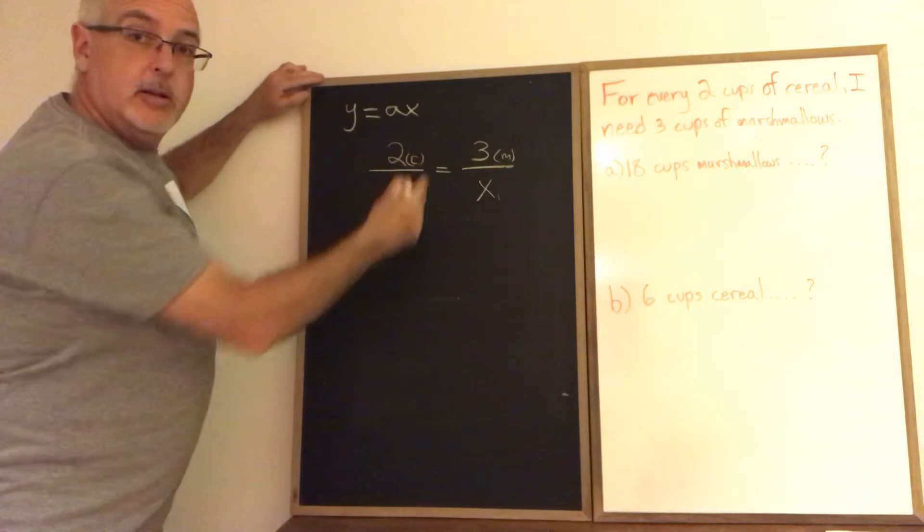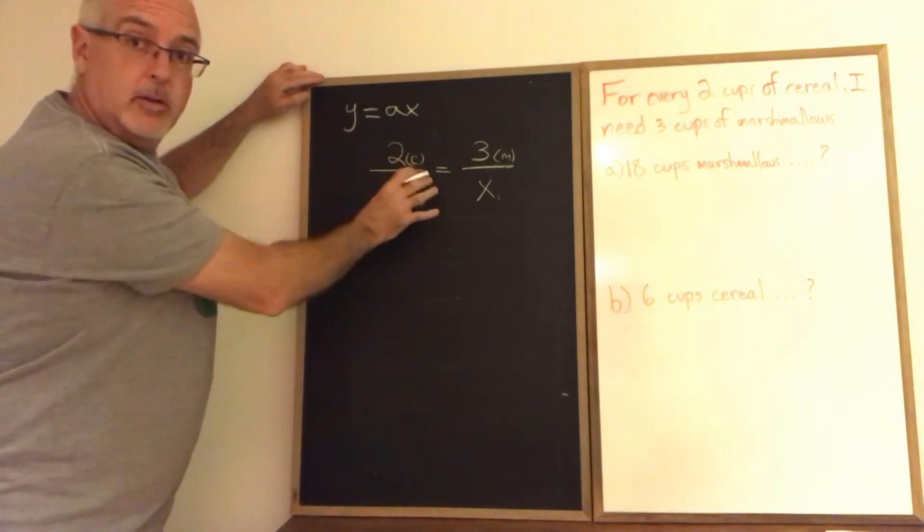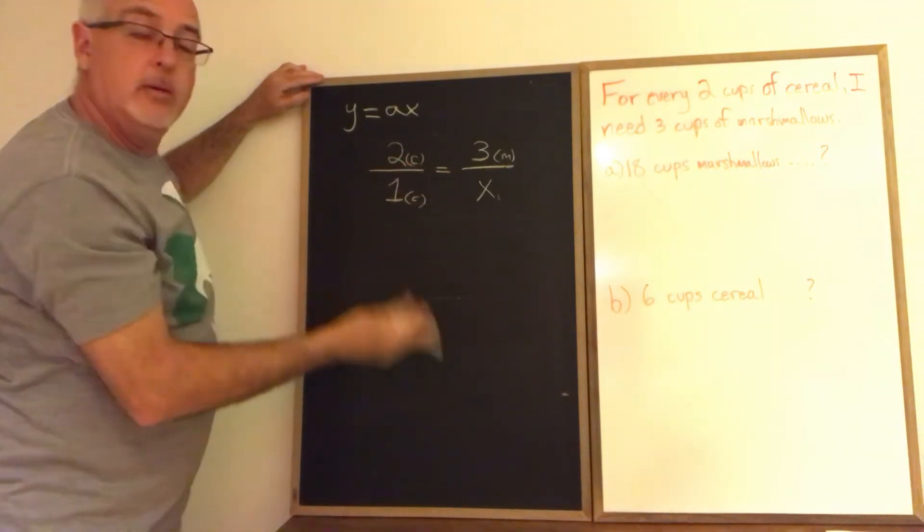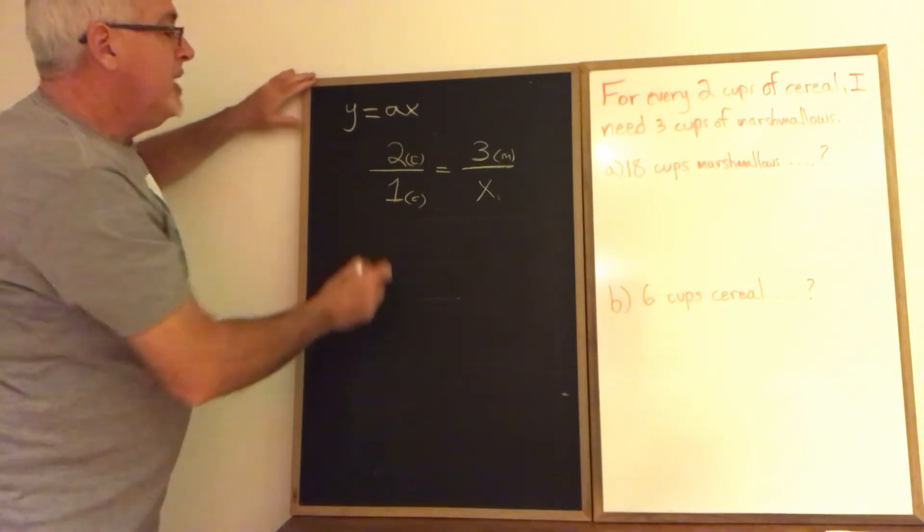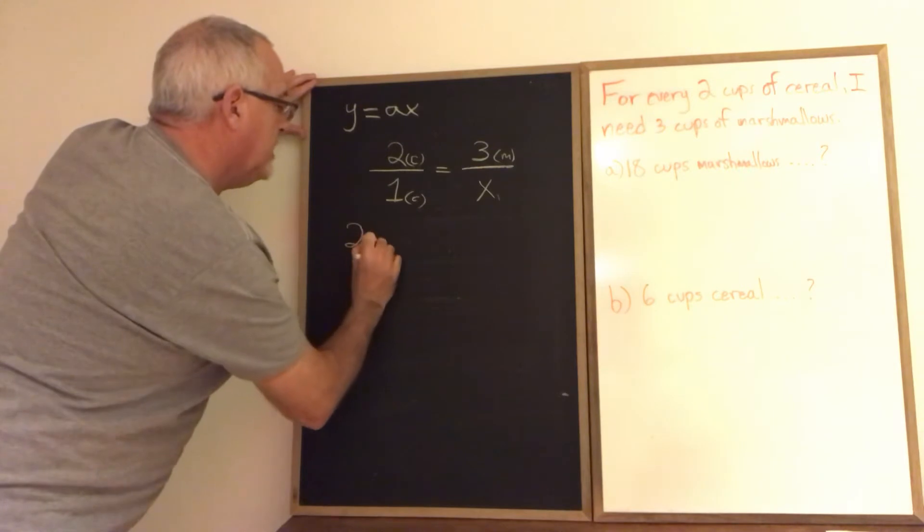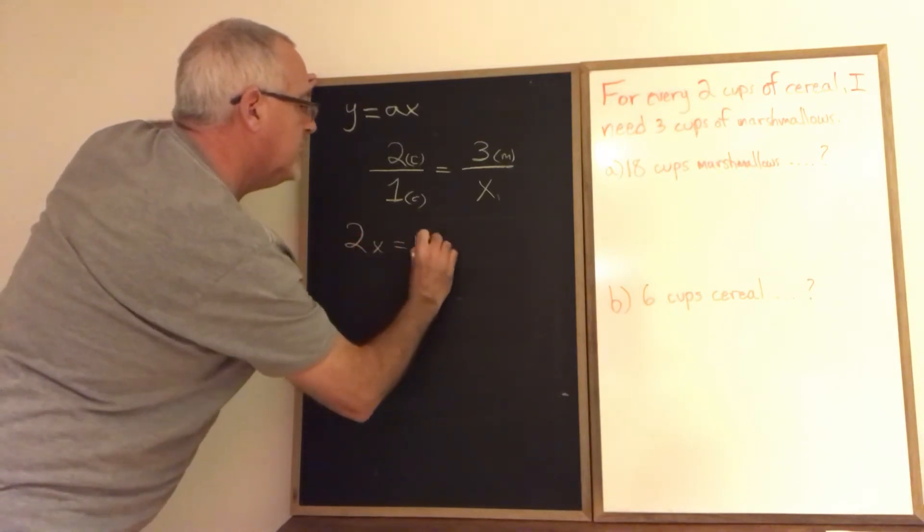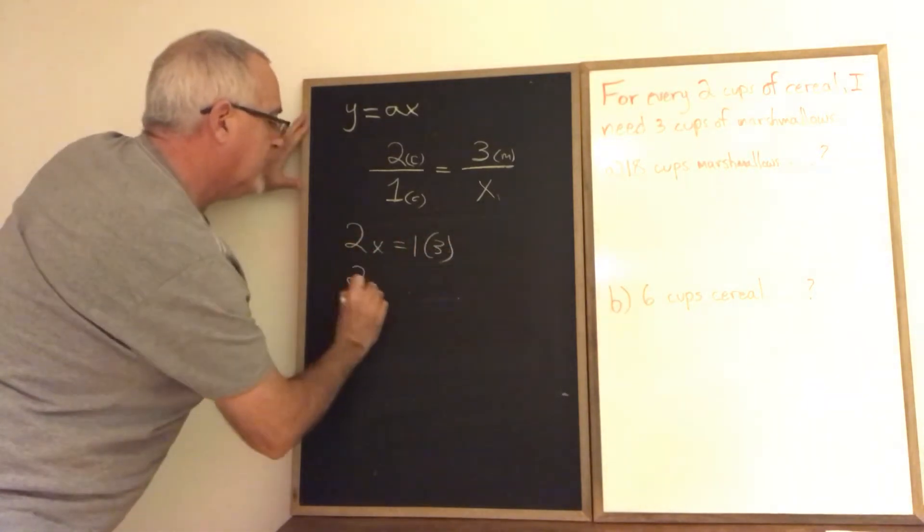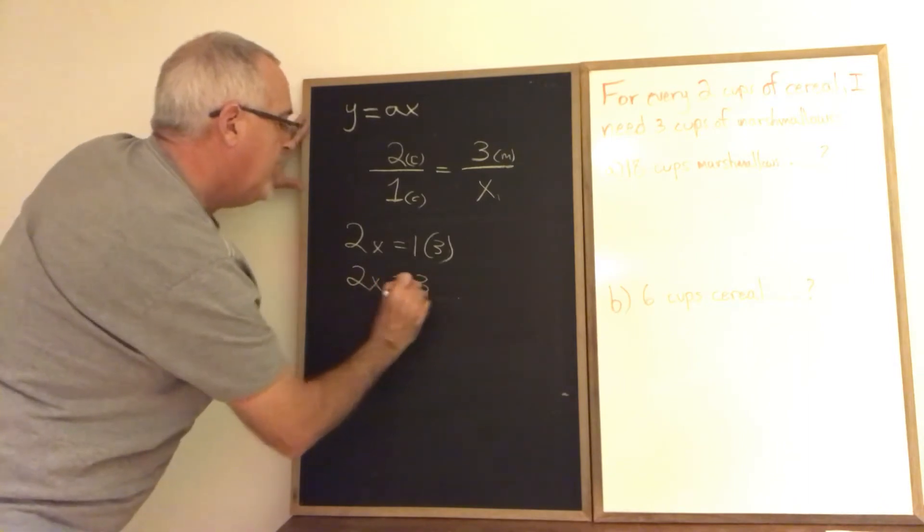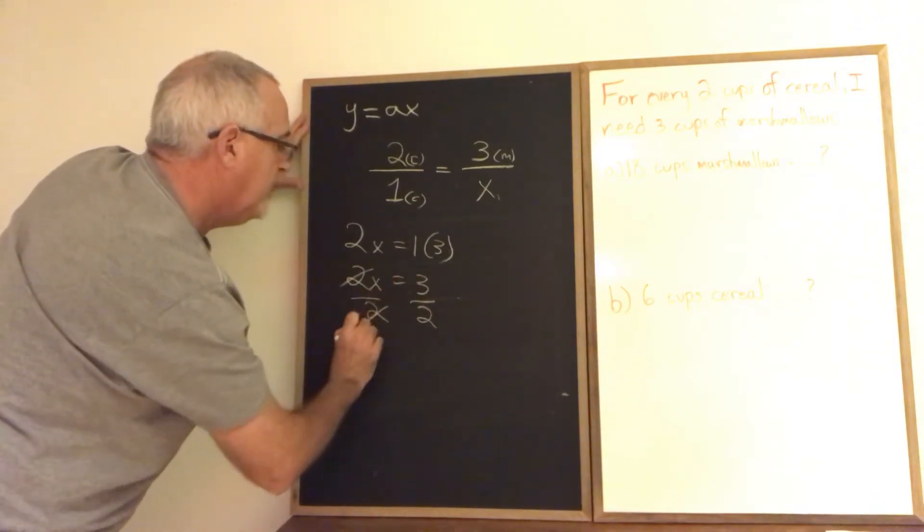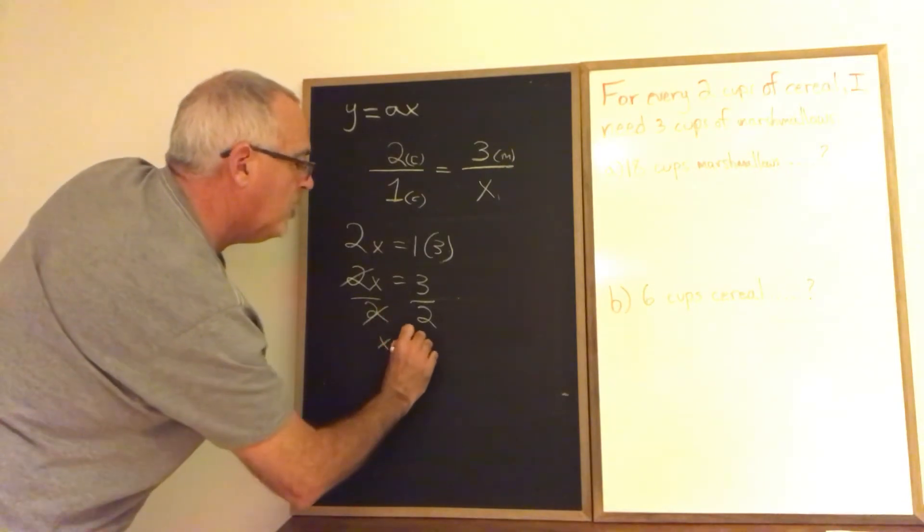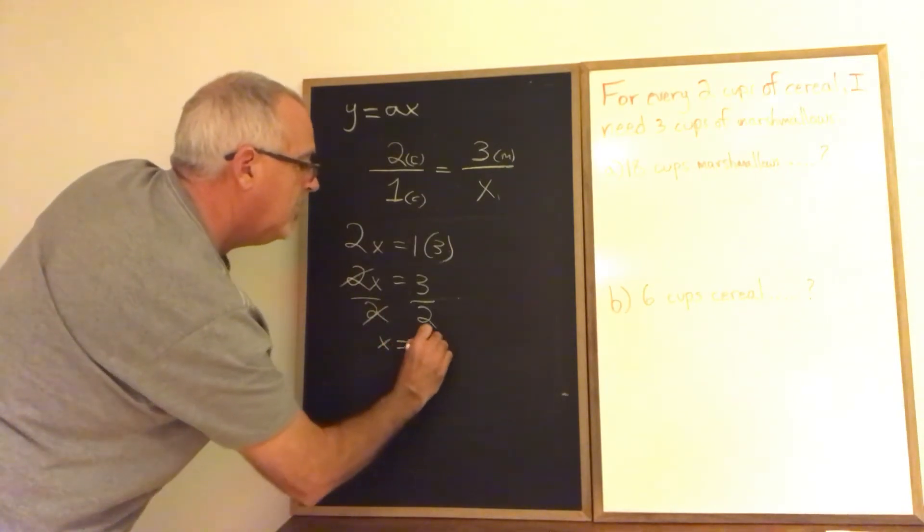Now again, you could do this in your head. A lot of students would be able to figure out that X is going to be equal to one and a half. But you need to justify your steps when you do math. So cross multiplying, I get 2X equals 1 times 3, which means 2X equals 3. And then if I divide both sides by 2 to isolate my variable, I get X equals 3 halves or if you prefer decimals, 1.5.